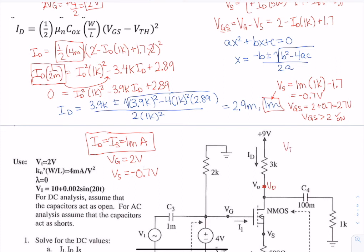Now we need to find VD, which is going to be here at this V0 node. We have VD is 9 minus ID times 3k. So we have 1 milliamp, so this gives us a value for VD of 6 volts.